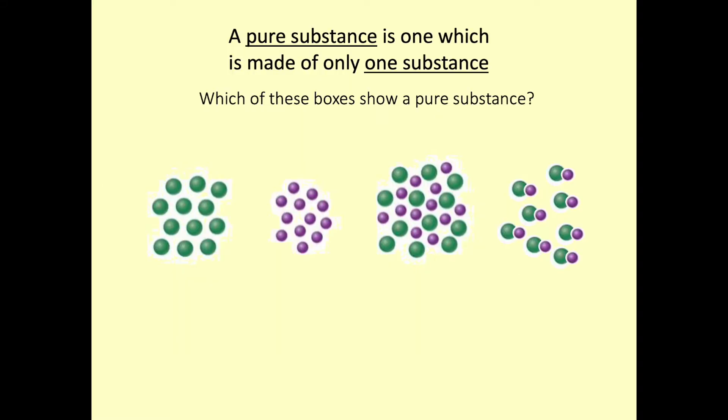In chemistry we define a pure substance to be one which is made of only one substance. We have four images here — can you have a go at considering whether they are pure or impure? Pause the video whilst you have a think about those.